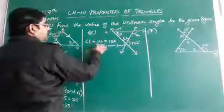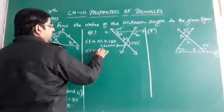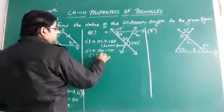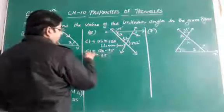Now we have angle 1. So, transpose this 150 to this side. We get angle 1 equal to 30 degree.